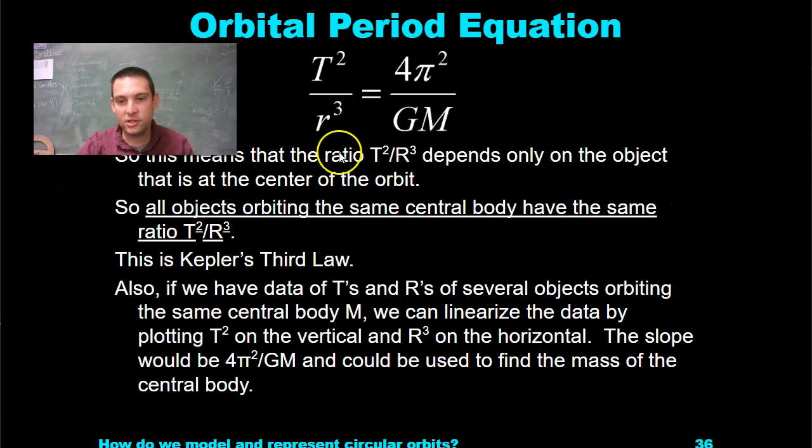This means the ratio T²/R³ depends only on the object that is at the center of the orbit. That center of, that giant mass. So all objects orbiting the same central body have the same ratio, Kepler's third law.